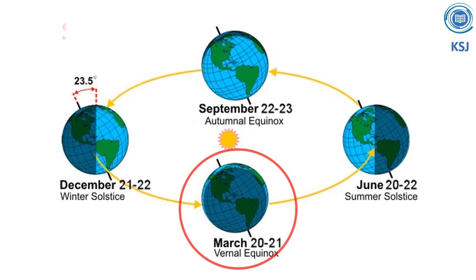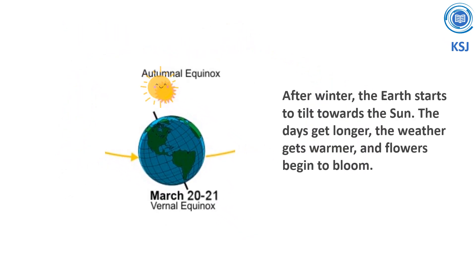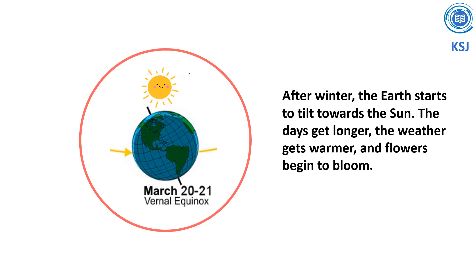Spring: after winter, the earth starts to tilt towards the sun. The days get longer, the weather gets warmer, and flowers begin to bloom.